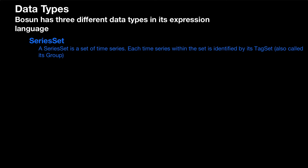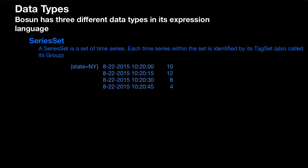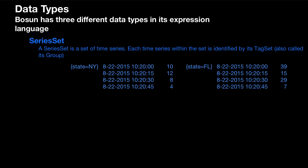There's a series set. A series set is a set of time series. Each time series within the set is identified by its tag set, which we also refer to as its group. So we have our tag set — state equals New York — and then we have date times, or timestamps, and values associated with them, and there's a series of them, so this is our time series.